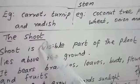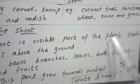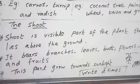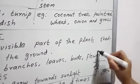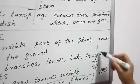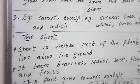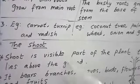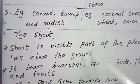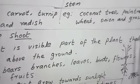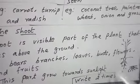So what is a shoot? Shoot is a visible part of a plant that lies above the ground. You can see the picture — this part is known as shoot. You can see the flower, buds, everything. The root part we can't see, but the shoot part is the visible part of the plant that lies above the ground.